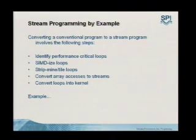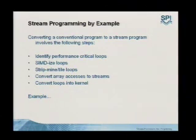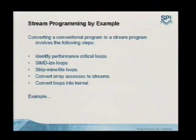I want to make this concrete by taking a simple program and converting it into a stream program step by step. This involves: first, identify the performance-critical loops — the nice part is you don't change the rest of your program, only the parts you care about. Second, convert those loops into SIMD form. Third, strip mine or tile the loops so the working set fits in on-chip memory. Those two steps are the hard thinking. The last two — converting array accesses into streams and converting loops into kernels — are basically syntactic transformations to communicate this mapping to the compiler.